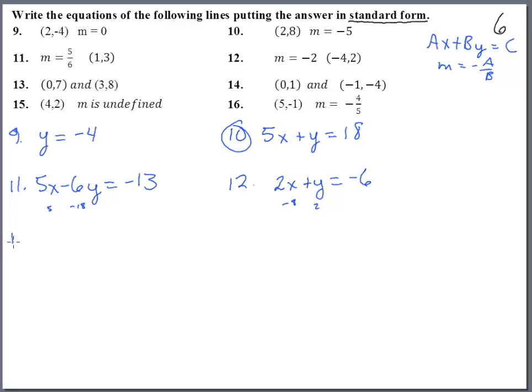Number thirteen - we've got two points here. That means, in order to get that A and that B, we need to find the slope first. The slope we're going to get by y minus y over x minus x, and we get one-third.